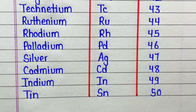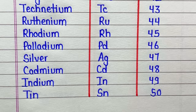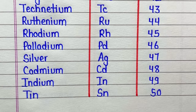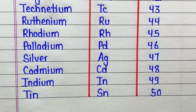Rhodium, symbol is Ru, atomic number is 45. Palladium, symbol is Pd, atomic number is 46. Silver, symbol is Ag, atomic number is 47. Cadmium, symbol is Cd, atomic number is 48.